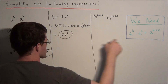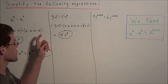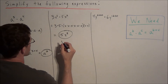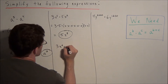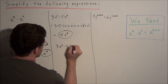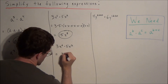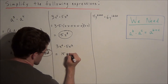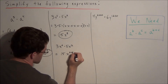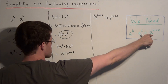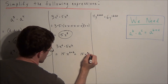The product of powers property is really useful for shortening the amount of work you need to do. For 3x to the sixth times 5x squared, all we need to do is compute 3 times 5 is 15, and x to the sixth times x squared equals x to the sixth plus 2, which equals 15x to the eighth power.